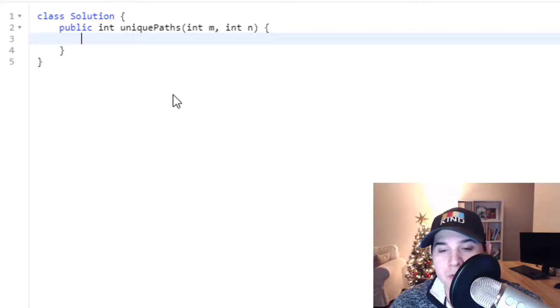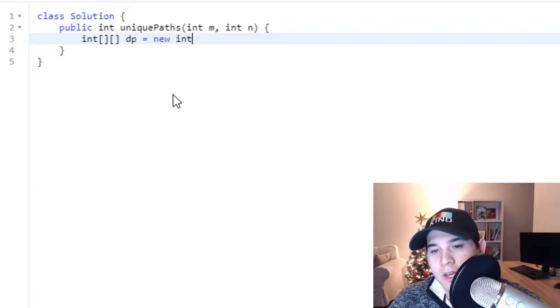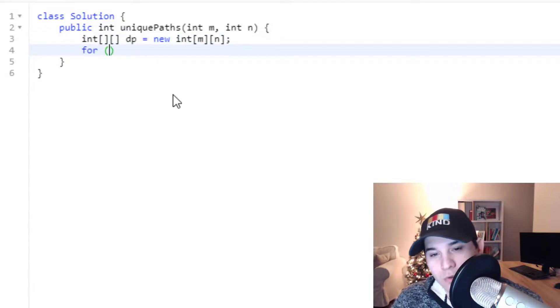So the first thing we want to do is we want to create an integer array. So let's create an integer array called dp and let's initialize it with m n. And now we need to loop over m n so all of our grid.